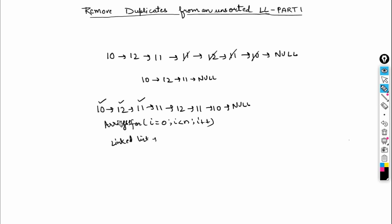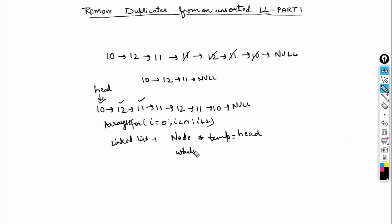To traverse the whole list, I can maintain a pointer to the head node. I'll maintain a pointer — say node* temp — pointing to the head node. Until temp is not equal to null, I can iterate over this list using a while loop: while temp is not equal to null, do something.